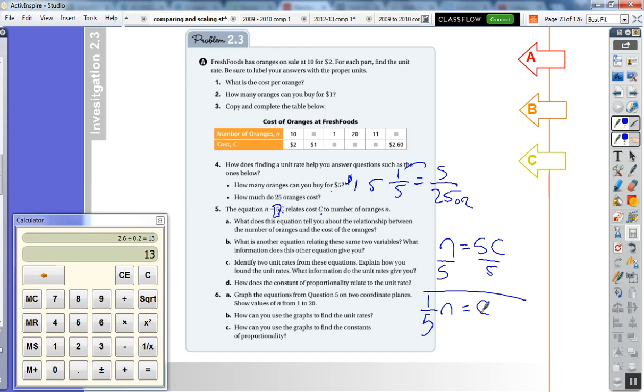In other words, your constant of proportionality in here is one fifth or 0.2, so that means for every orange you're going to have to pay one fifth of a dollar or 20 cents.